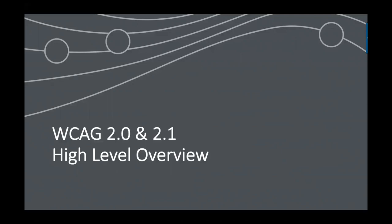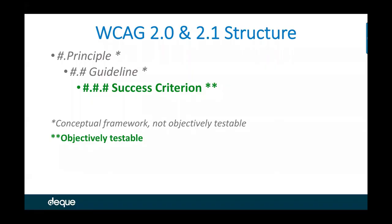Let's take a look at WCAG 2.0 and 2.1 from a high level as we think about this as a compliance measure. It's really important to understand this makes a good compliance measure because it is objective. The structure has principles at the top level, guidelines at the next level down, and at the third level deep are the success criteria — the actual requirements.